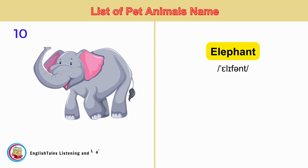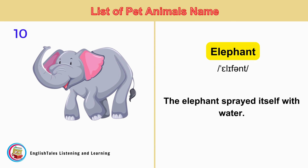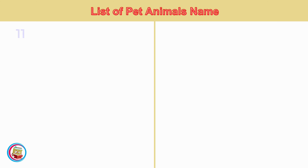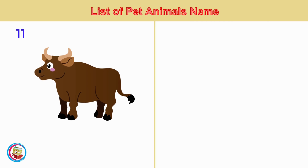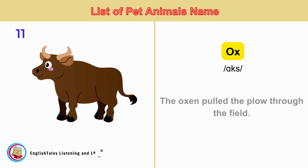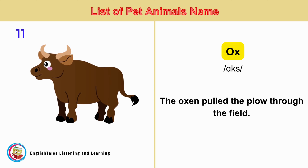Elephant. The elephant sprayed itself with water. Ox. The oxen pulled the plow through the field.